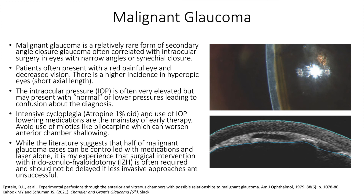One final note: occurrence of malignant glaucoma in one eye increases the risk of occurrence in the contralateral eye at the time of surgery if and when needed. This should prompt prophylactic IZH in the contralateral eye with proper education and consenting of the patient to set appropriate expectations.